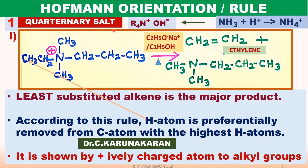Let us study Hoffman orientation rule in detail with two examples. Quaternary ammonium salt is represented by the formula R4N+ OH-. It is a derivative of ammonium. Ammonium on reaction with 4 moles of alkyl halide gives quaternary ammonium salt, as we have studied in the amines chapter.